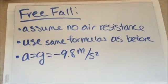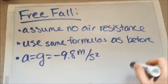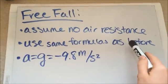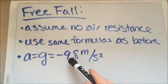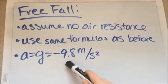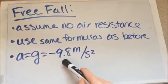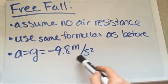In free fall problems, we are to use the same formulas as listed on the screen. We also assume no air resistance. Thus, the acceleration is just due to gravity and we use the gravitational constant of negative 9.8 meters per second squared.